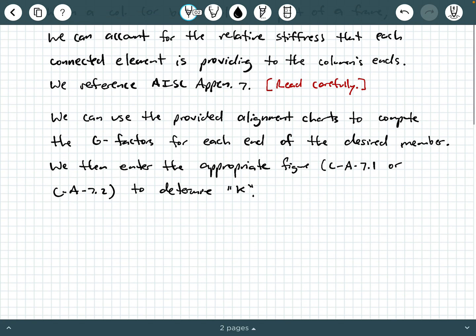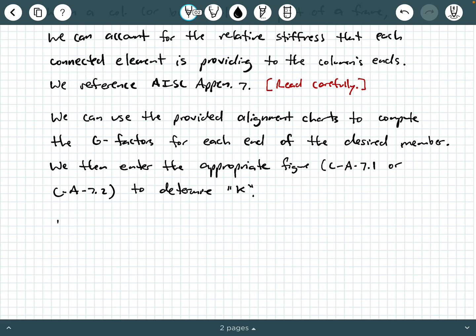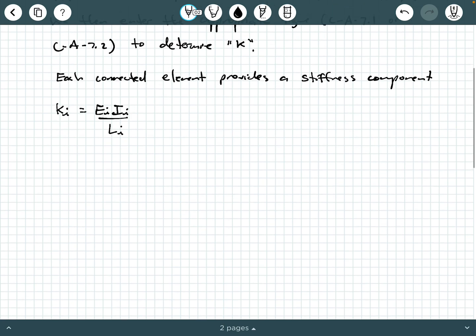Well, each connected element provides a stiffness component, k_i = EI/L_i. So basically, what we're looking at is, let's say that we have a member here. This is the member we're interested in, and it's part of a frame system. So it's got all these other members attached to it. And this is our member in question.